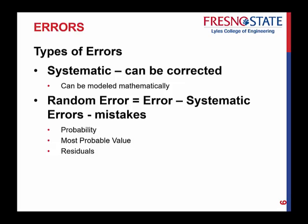With these errors, there are two types: systematic and random. Systematic errors are the 'good' ones because they can be corrected and modeled mathematically. For example, if your instrument consistently measures a hundredth of a foot short per foot, you can make a correction for that. As long as conditions remain constant, you can mathematically model and correct systematic errors.